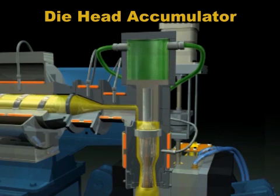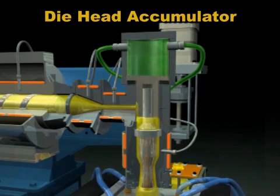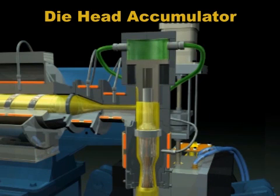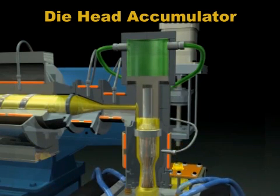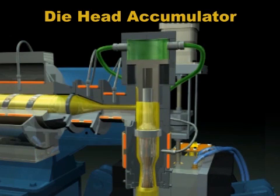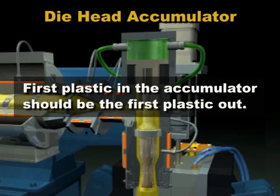The die head accumulator. Here the plastic enters the die head from the extruder. The plastic pressure forces the ram up. To minimize the heat history of plastic, it's best that the first plastic into the accumulator is also the first plastic out.